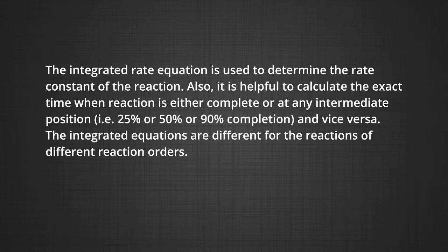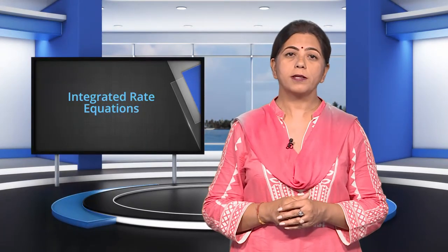The integrated rate equation is also helpful to calculate the exact time when a reaction is either complete or at any intermediate position — that is, 25 percent, 50 percent, or 90 percent completion, and vice versa. The integrated equations are different for reactions of different orders. We shall determine these equations only for zero and first order chemical reactions.